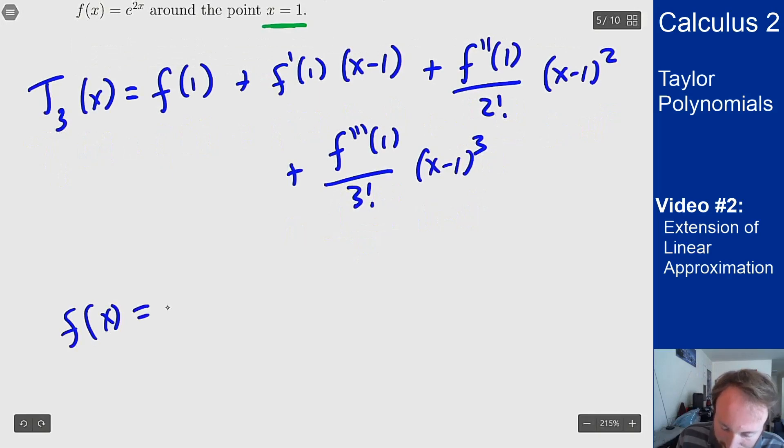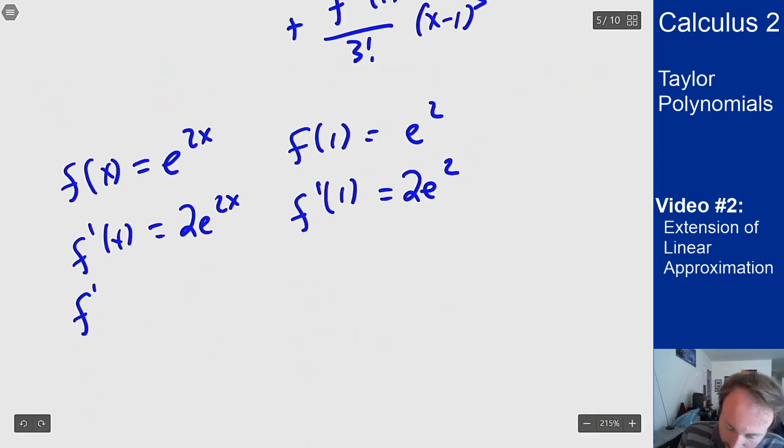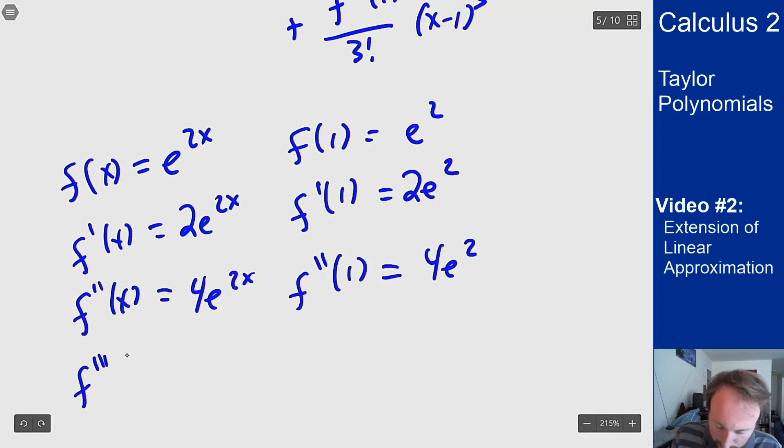f(x) = e^(2x), so f(1) = e^2. f'(x) = 2e^(2x), so f'(1) = 2e^2, and more derivatives bring down more factors of 2. The second derivative is 4e^(2x), so f''(1) = 4e^2. The third derivative is 8e^(2x), so f'''(1) = 8e^2.